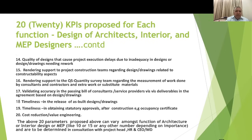Additional KPI parameters include timeliness in releasing as-built drawings, timeliness in obtaining statutory approvals after construction such as occupancy certificates or completion certificates, and cost reduction and value engineering. These approximately 20 parameters can vary among different functions — architects, interior design, or MEP — and can number 10, 15, or more depending on the importance to each respective function, the stage of development, and are to be determined in consultation with the project head, HR, and the COMD.